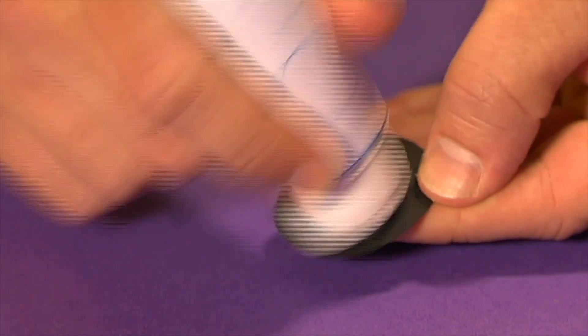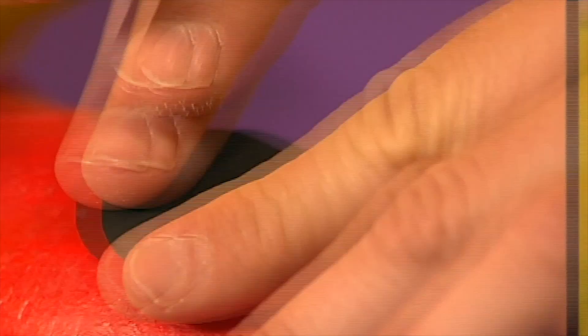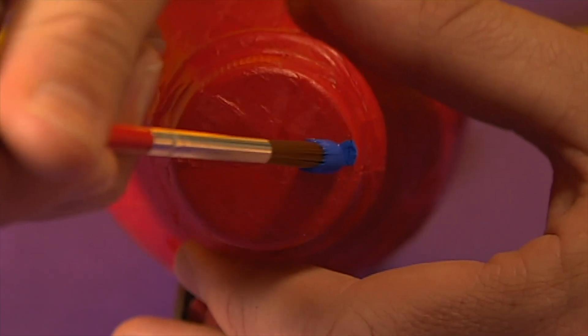Next, stick the paper circle to the top of the plane for the cockpit and add some details with different coloured paint.